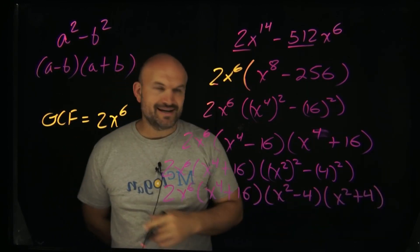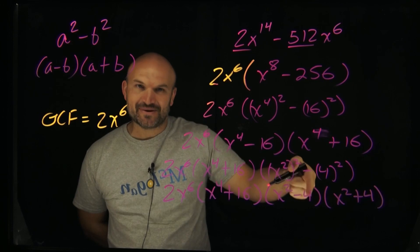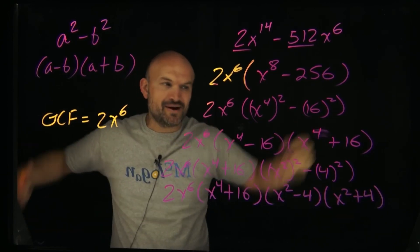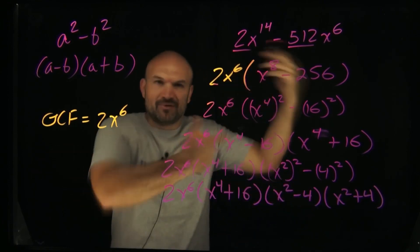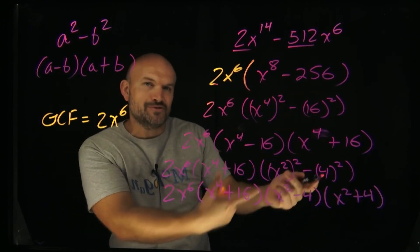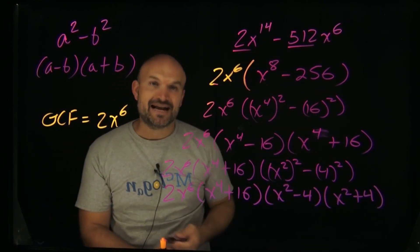And now hopefully you recognize, oh my god, I have another squared number minus another square number. Because 4 is a square number, that's 2 squared. Here, I can't do anything with this. And hopefully you recognize here without having to do parentheses again, that's x squared and that's 2 squared. So that's going to be x minus 2, x plus 2.